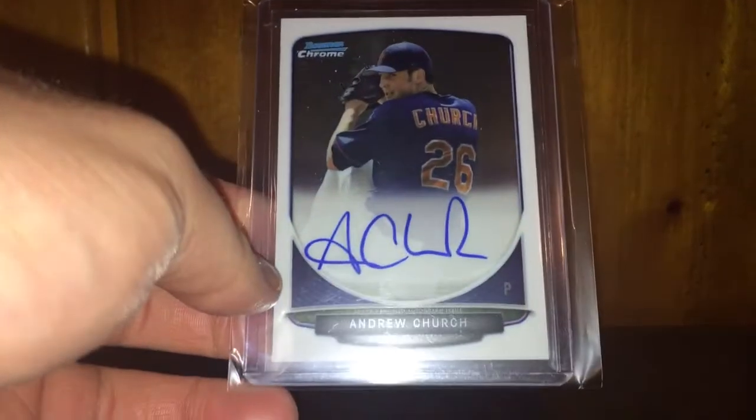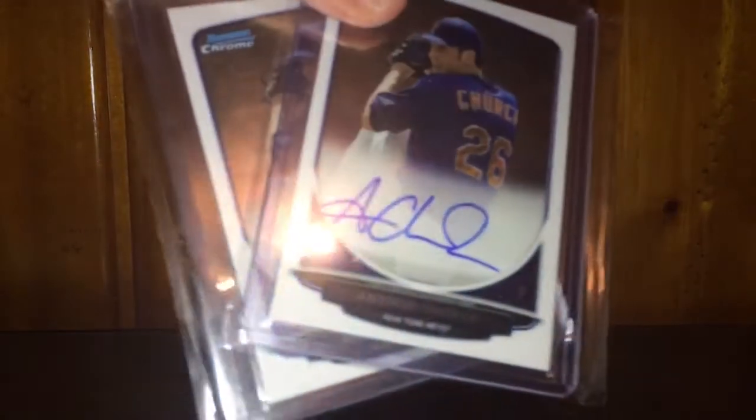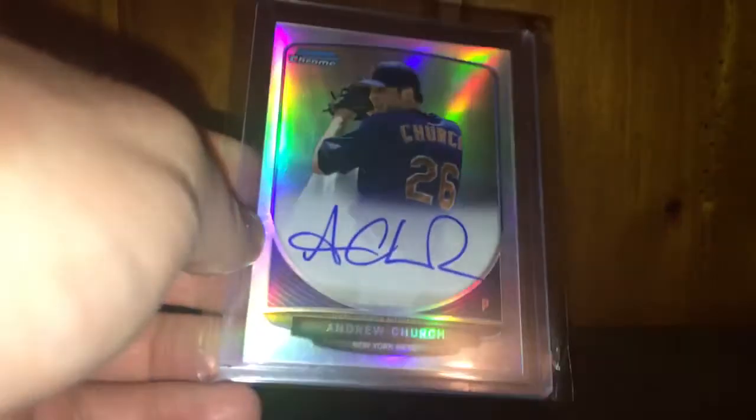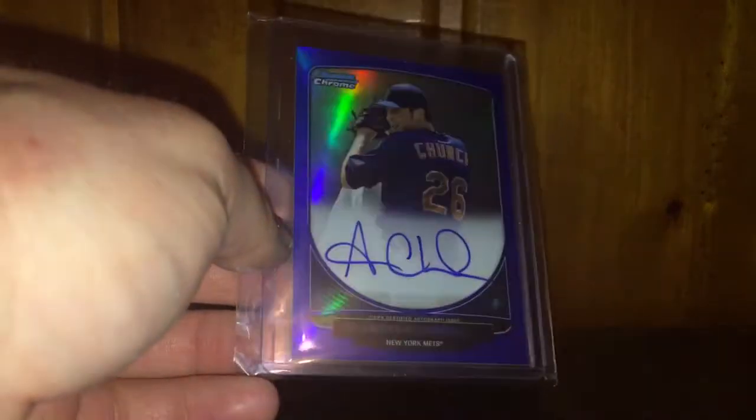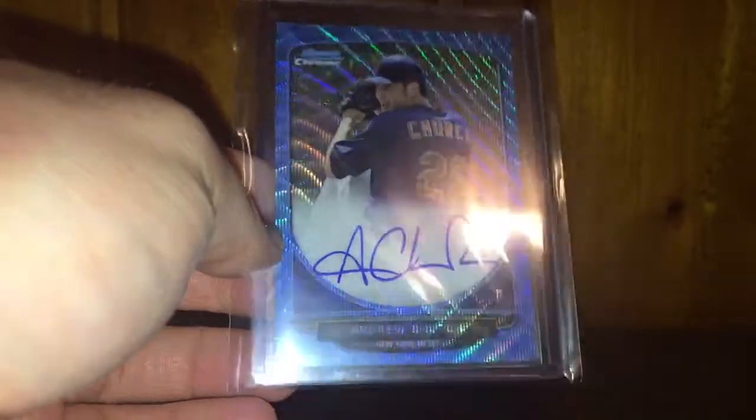My only attempt ever at prospecting didn't go too well. Andrew Church base, and two more Andrew Church bases. Got an Andrew Church refractor, I think that's a 500 or not numbered. Andrew Church blue, I like the blue because it just goes with the Mets. And then the last Andrew Church is a blue wave numbered 250. I always love the blue wave cards.